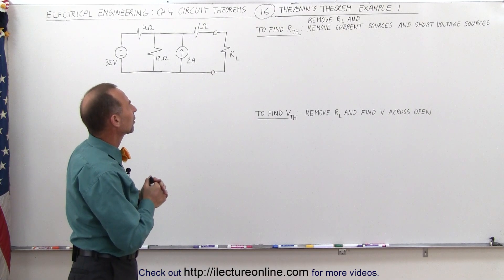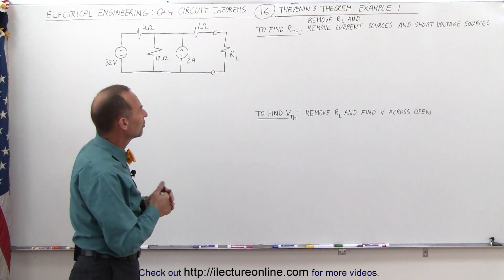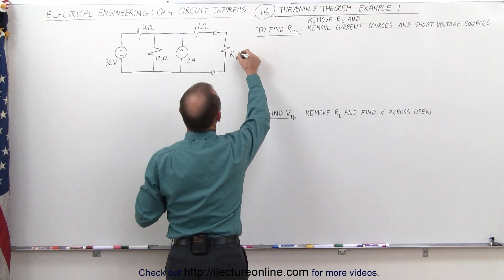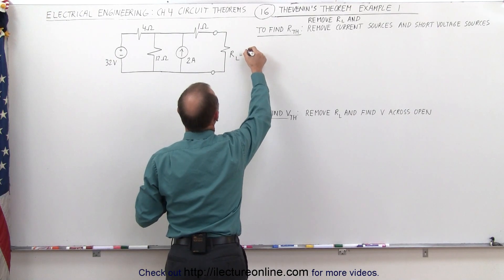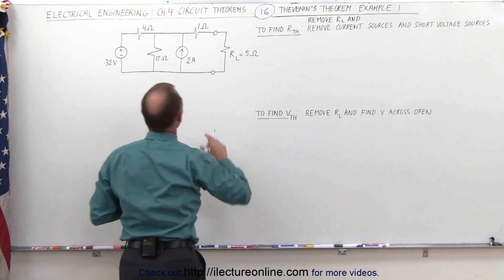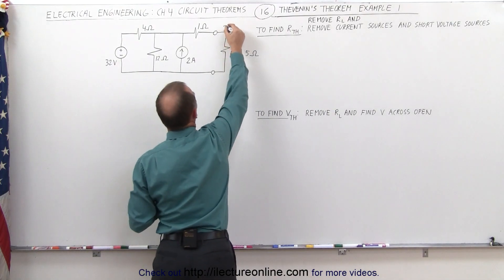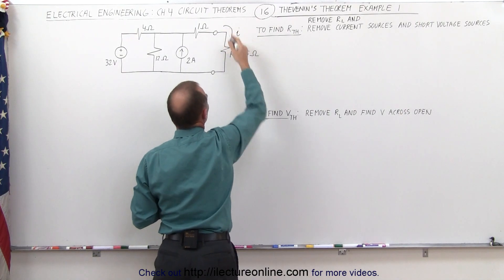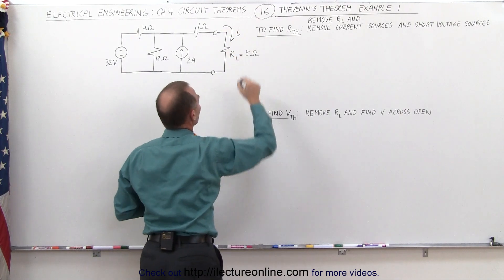Let's say that the load resistor is equal to 5 ohms. And what we're trying to do is we're trying to find the current I through the load resistor.